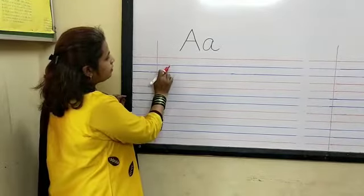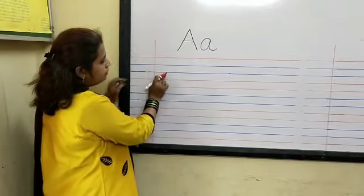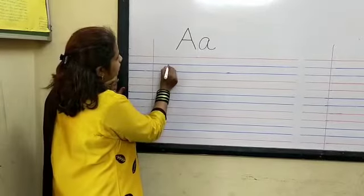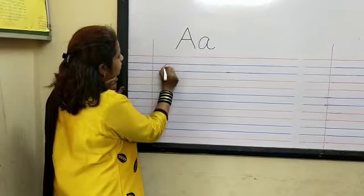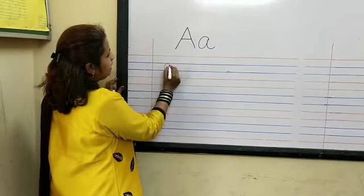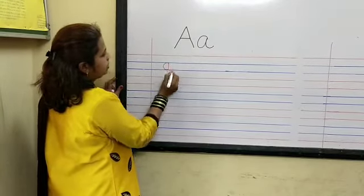You will write small a in these two blue lines. First we write curve, then standing line and a small curve. A. Again.